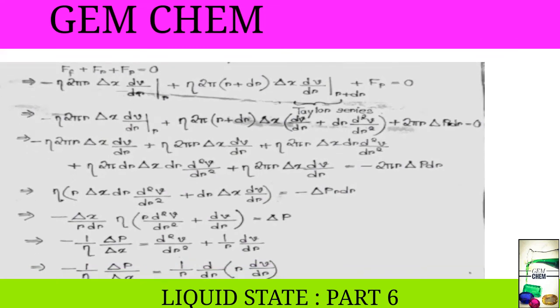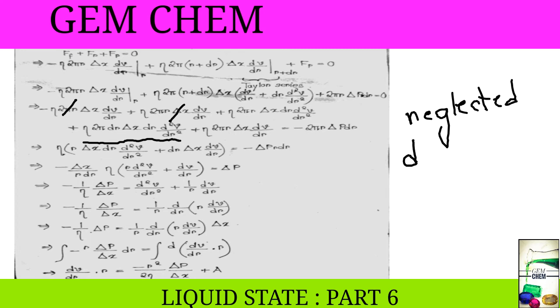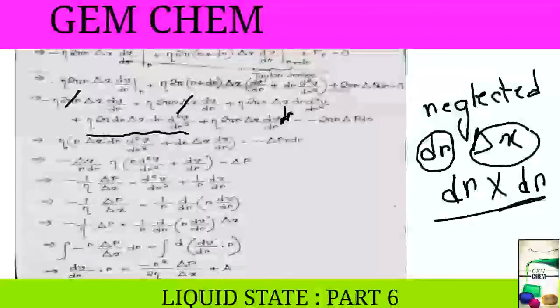Now, in the next step we obtain this one as it is and then we expand this together. So, we get 1, 2, 3, 4 terms and this one we have taken in the right hand side. Now, we will cancel the terms. First, this term and this term gets cancelled and this term is neglected. Why is it neglected? This is neglected because there is a presence of dr and also delta x. These both are very small. And here we see that there is twice dr, dr into dr. So, it becomes very very small, so it can be neglected easily.